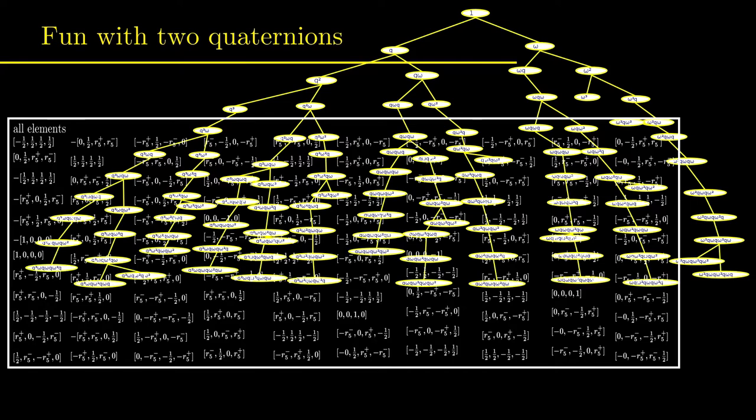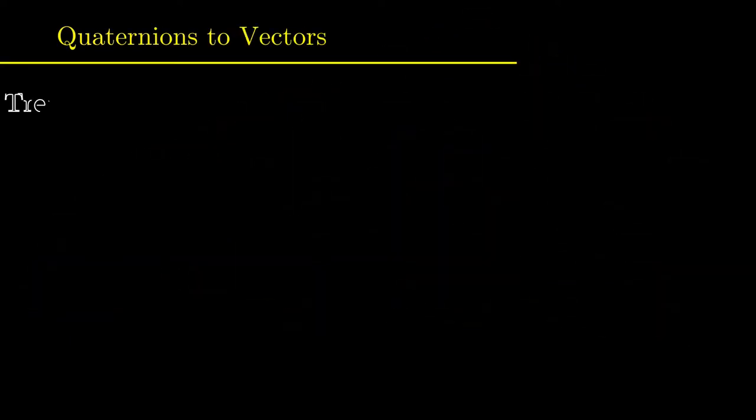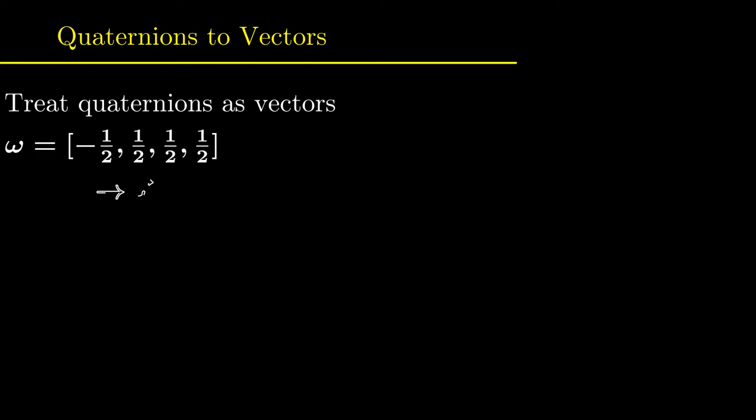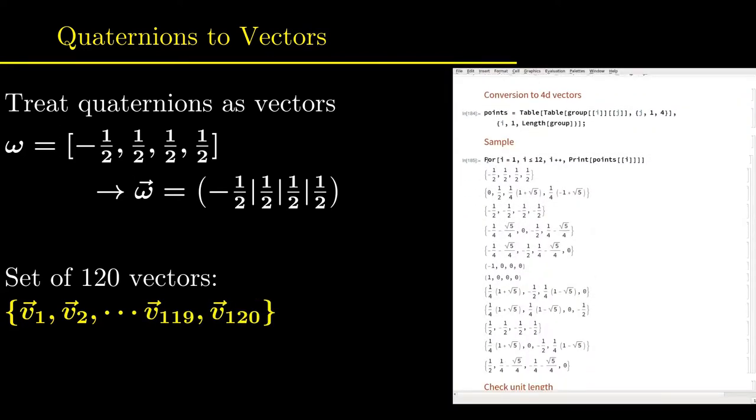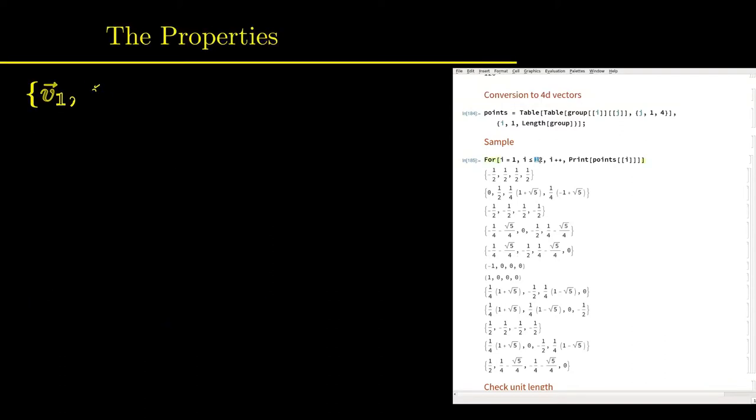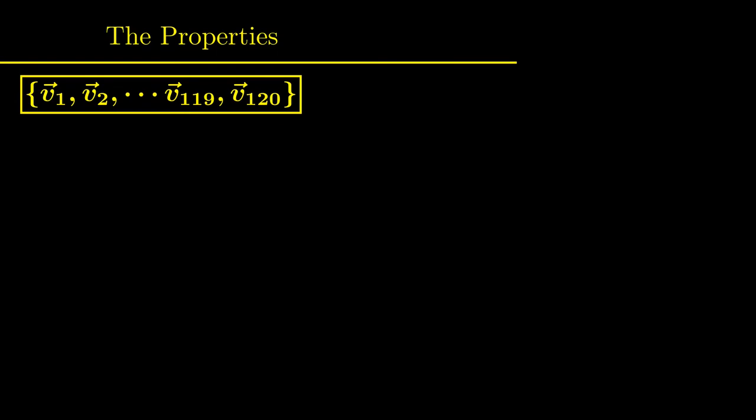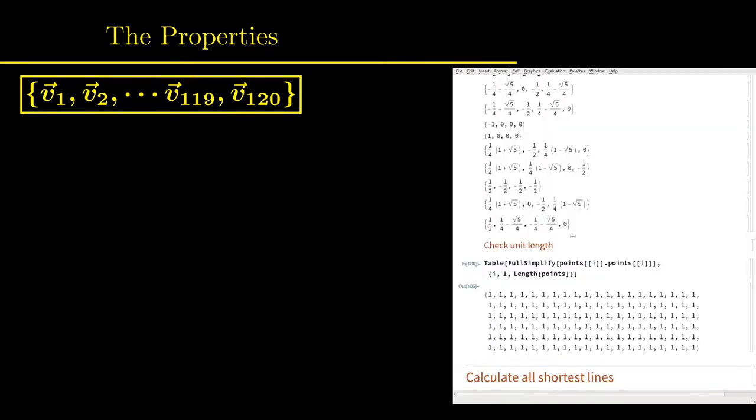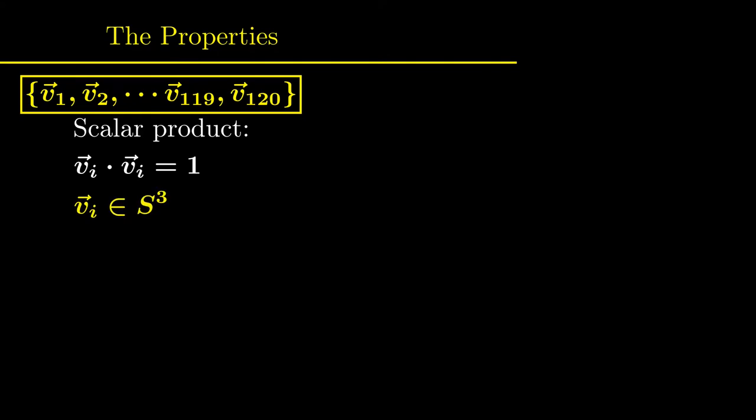Now let's turn these 120 quaternions into geometry. We simply forget about their imaginary units and treat each quaternion as a four-dimensional vector pointing towards a position in a four-dimensional space. The scalar product of two vectors comes as a useful tool. When the length of each vector is calculated, it turns out that they all have the same unit length. All points are therefore located on a hypersphere in a four-dimensional space.